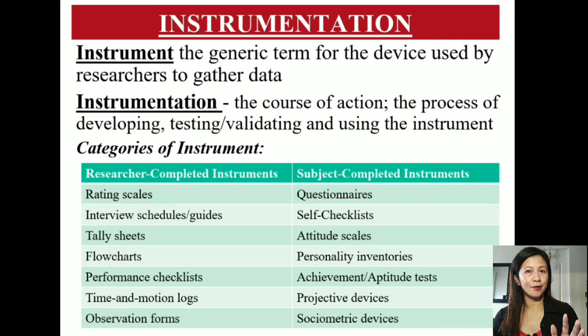Instrumentation refers to the process of developing, testing, validating, and using an instrument. A research instrument is the device used by a researcher to collect or gather needed data. Research instruments may be categorized into researcher-completed and subject-completed. Researcher-completed instruments include rating scales, interview guides, tally sheets, flow charts, performance checklists, logs, and observation forms. Subject-completed instruments include questionnaires, checklists, attitude scales, personality inventories, achievement or aptitude tests, projective devices, and sociometric devices.